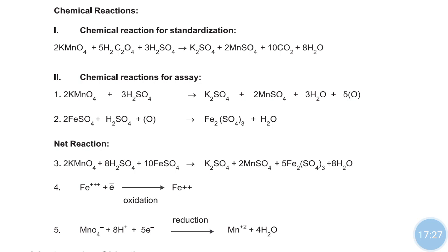KMnO4 is a powerful oxidizing agent in acidic medium compared to neutral medium, so we use a suitable acid to increase its reduction potential value. The products formed are potassium sulfate K2SO4, manganese sulfate MnSO4 twice, carbonic acid H2CO3, and water. The carbonic acid H2CO3 is then converted to water and CO2. This is the chemical reaction for standardization.